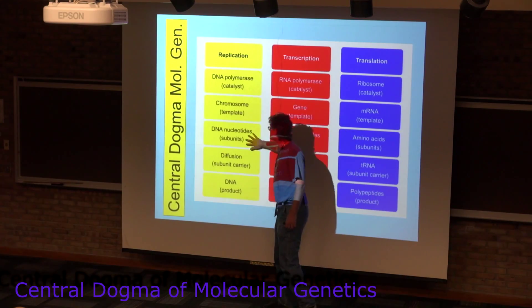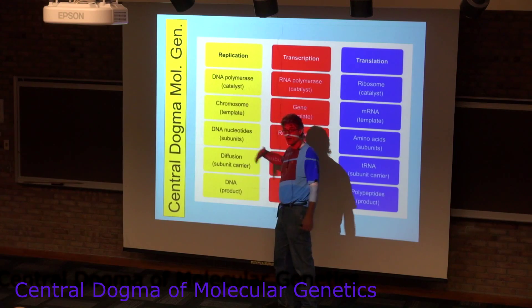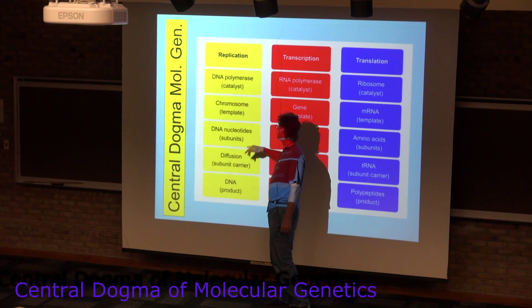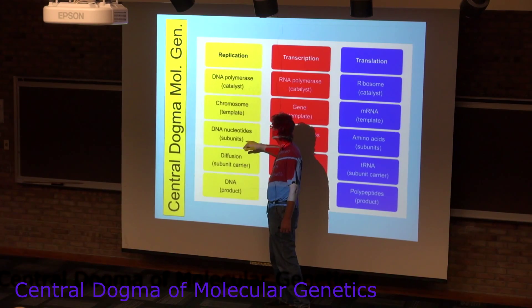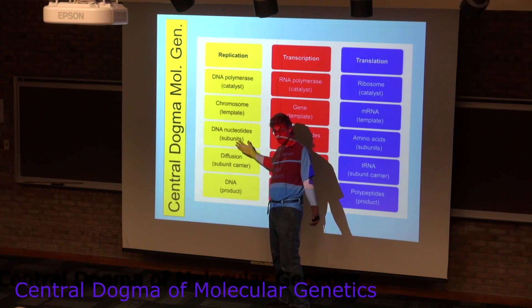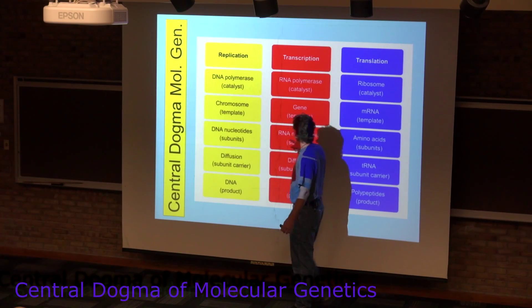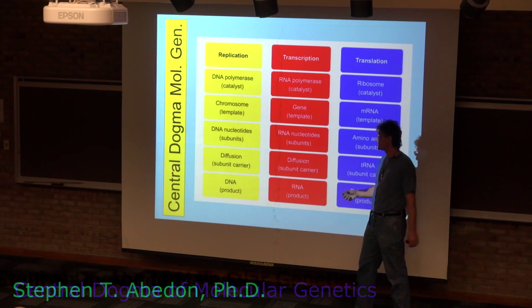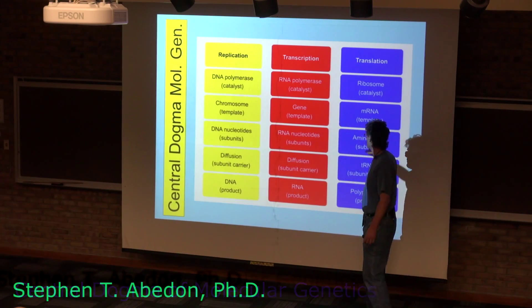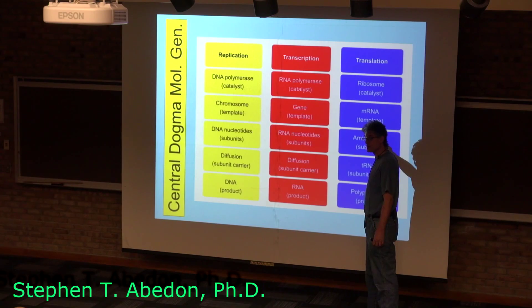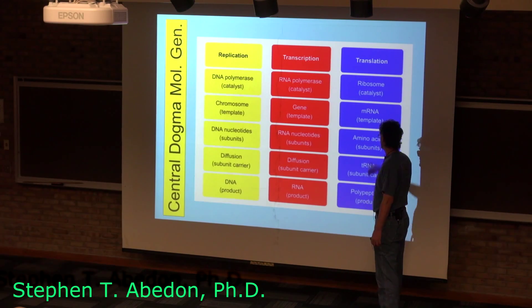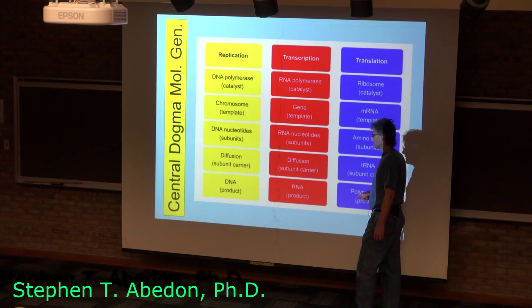What are the subunits that give rise to the polymers? All of these are polymerization processes. For DNA it's DNA nucleotides, for RNA it's RNA nucleotides, and for translation — the making of polypeptides — it's the amino acids.